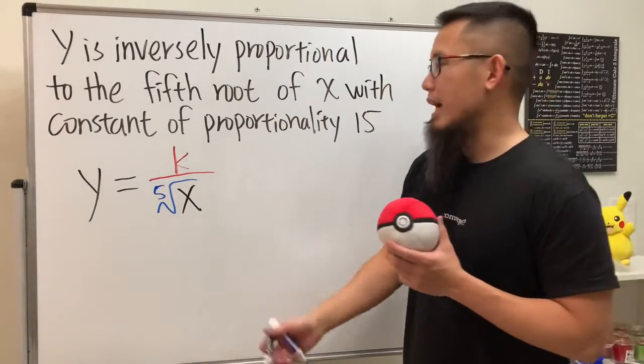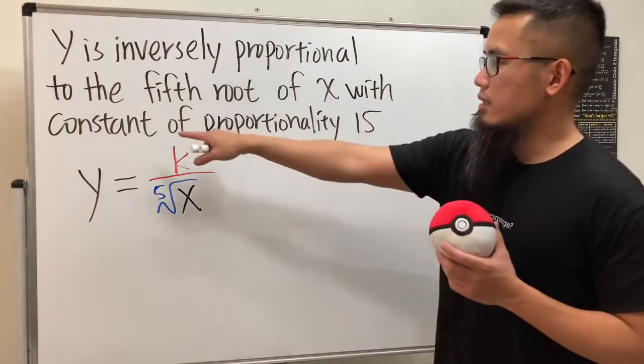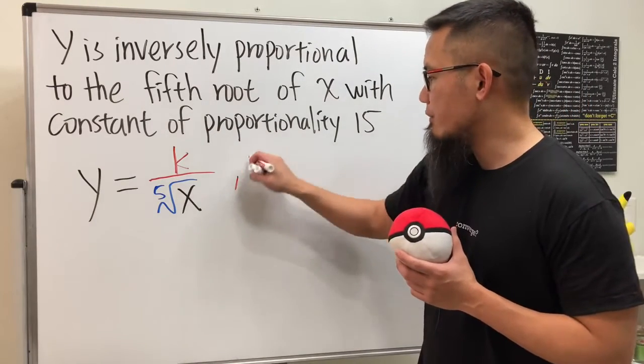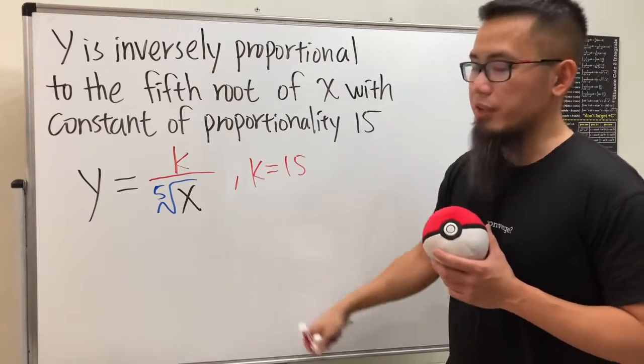Right, so that will be it for that. But it does tell us the constant of proportionality is equal to 15. So that means we know k is equal to 15, and of course we can just put that down right there.